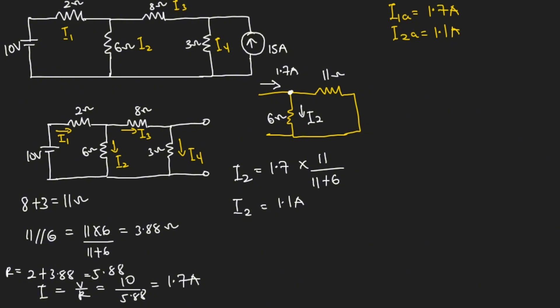The remaining current will flow through the 11 ohms, so I11 equals 1.7 minus 1.1, giving us 0.6 amperes. Since the 11 ohms was formed by adding the 8 ohms and the 3 ohms in series, the current flowing through both the 8 ohms and the 3 ohms is also 0.6 amperes. So I3A will be 0.6 amperes and I4A will also be 0.6 amperes.